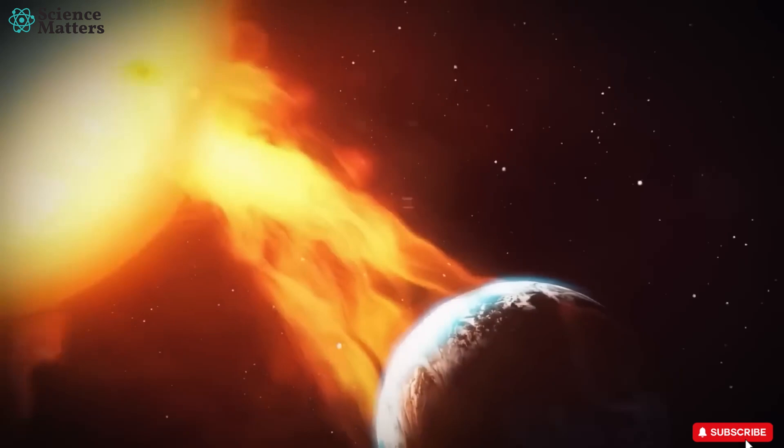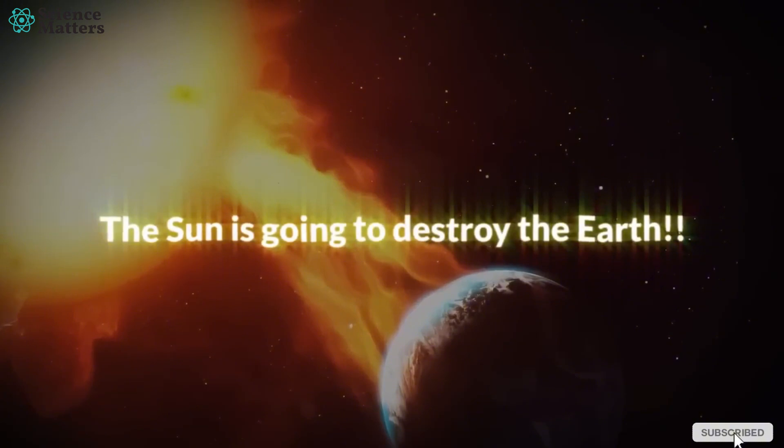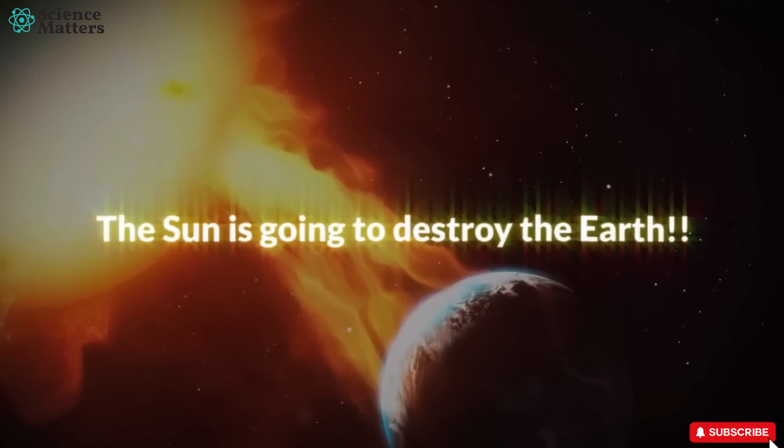So that means, soon, the sun is going to destroy Earth. But friends, on a lighter note, about 163 years ago, a similar explosion already occurred on Earth. The year was 1859.